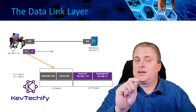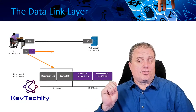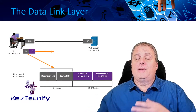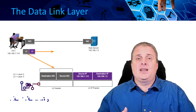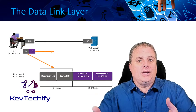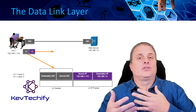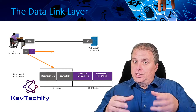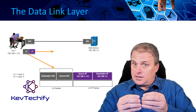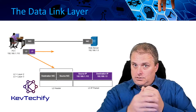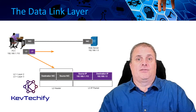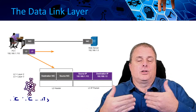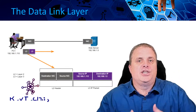Once it identifies that problem, it gets rid of that frame. When that frame is discarded, it needs to be resent — but that's handled by the upper layers. Layer 3 and above handles resending that data. Layer 2 just identifies that there's an error and then eliminates — or rejects — that frame.